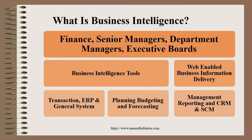What is business intelligence? As you see the diagram, at the bottom are the transactional processing systems — the TPSs, ERP (enterprise resource planning), and general systems. We have planning, budgeting, and forecasting; management reporting; and CRM and SCM — supply chain management. On top of that, there is a layer called web-enabled business information delivery and business intelligence tools. And on top is finance, senior managers, department managers, and executive boards.